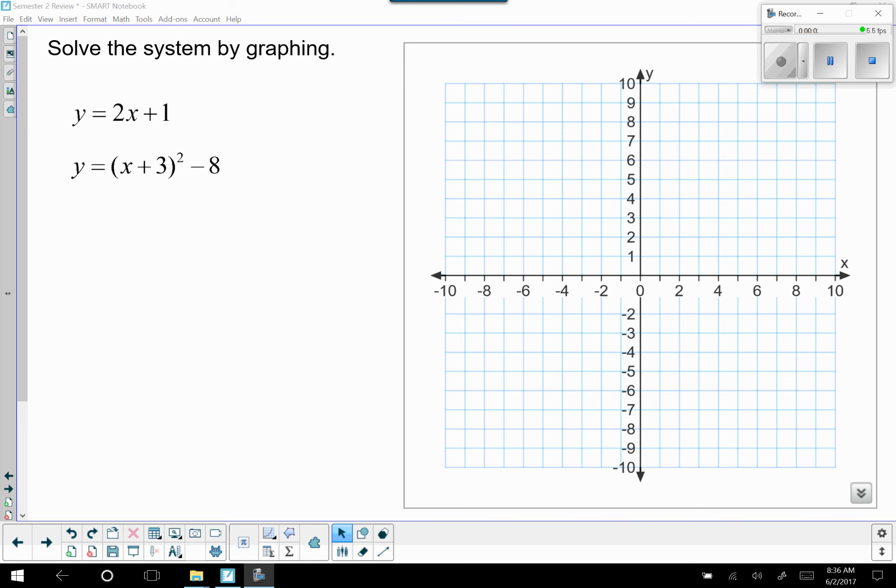So for the last question, we're going to graph y equals 2x plus 1. We can do this one in green, and we'll say y-intercept is 1, slope is 2, up 2 over 1, down 2, left 1.